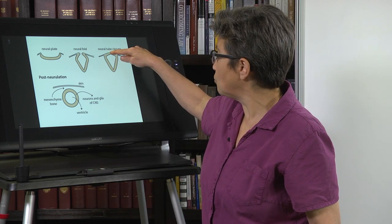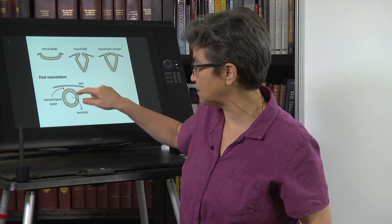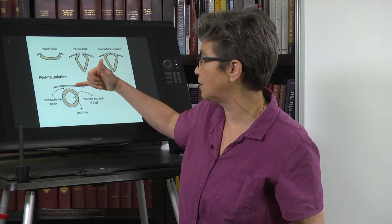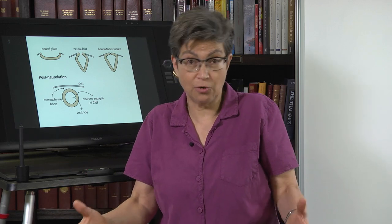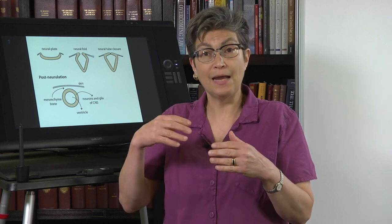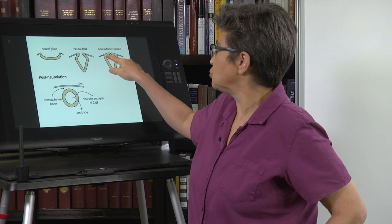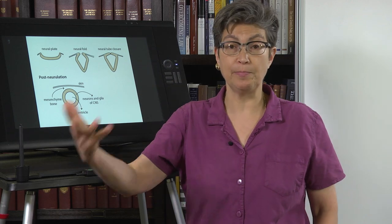The tube closes and then it ends up sinking beneath the skin. There is ectoderm and mesenchyme that comes in between the skin and the neural tube, and that enables us to cover the central nervous system — the spinal cord — with muscle and bone and skin. Getting this neural tube closure is called neurulation — we're going to make a tube.